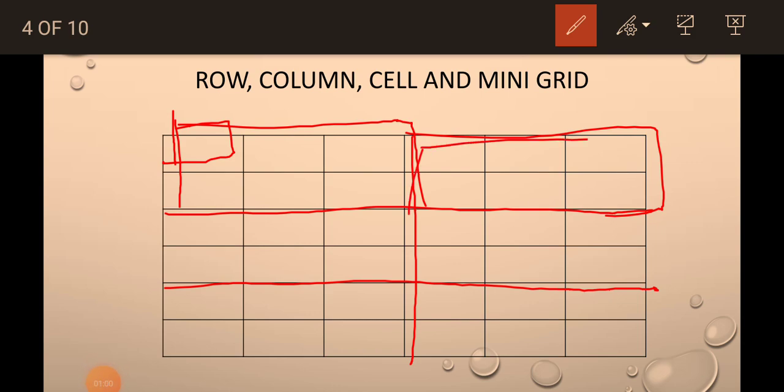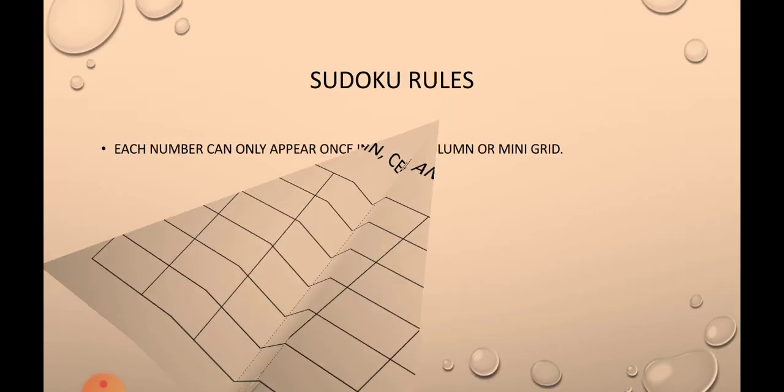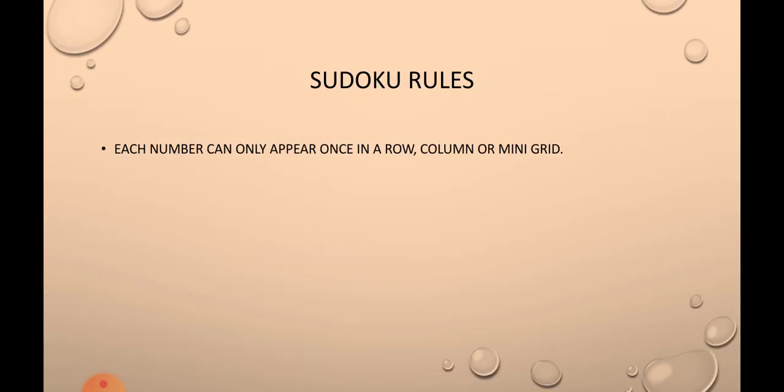Now the Sudoku rules: each mini grid will contain the numbers 1 to 6, because this is a 6x6 Sudoku. Each row will contain the numbers 1 to 6, and each column will also contain the numbers 1 to 6.